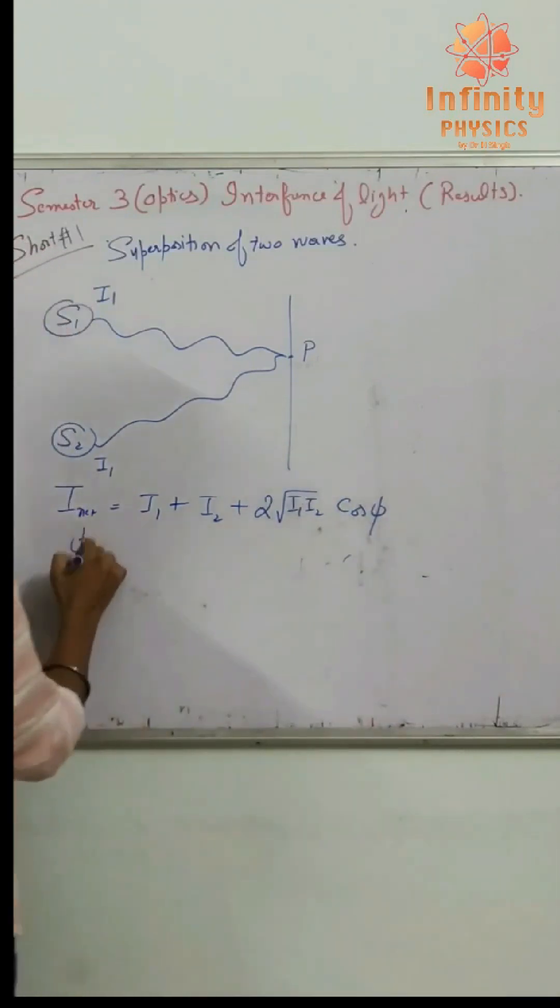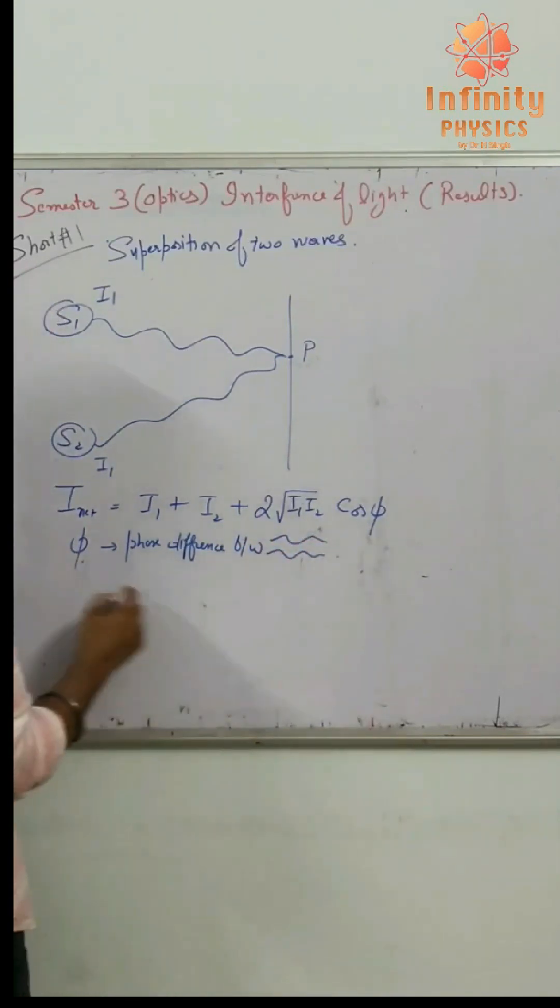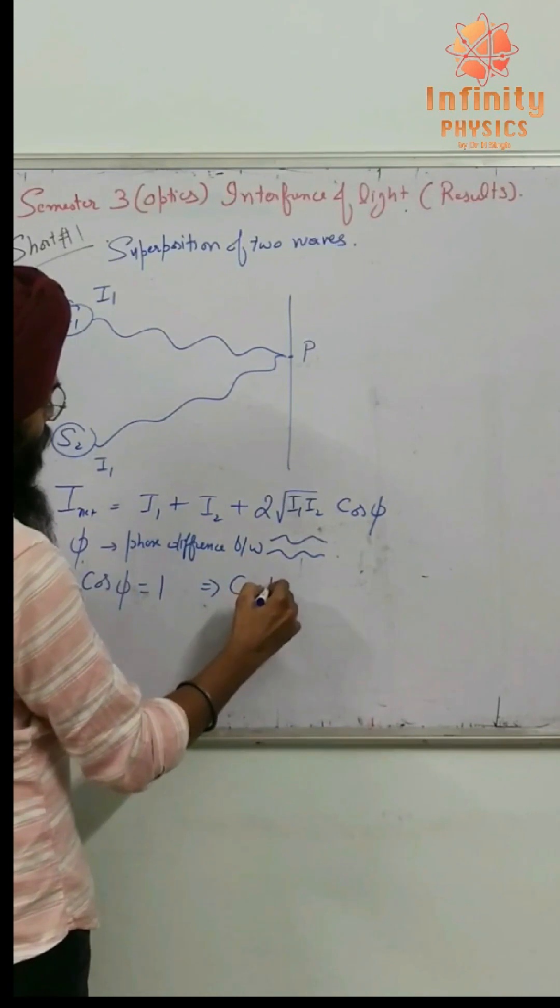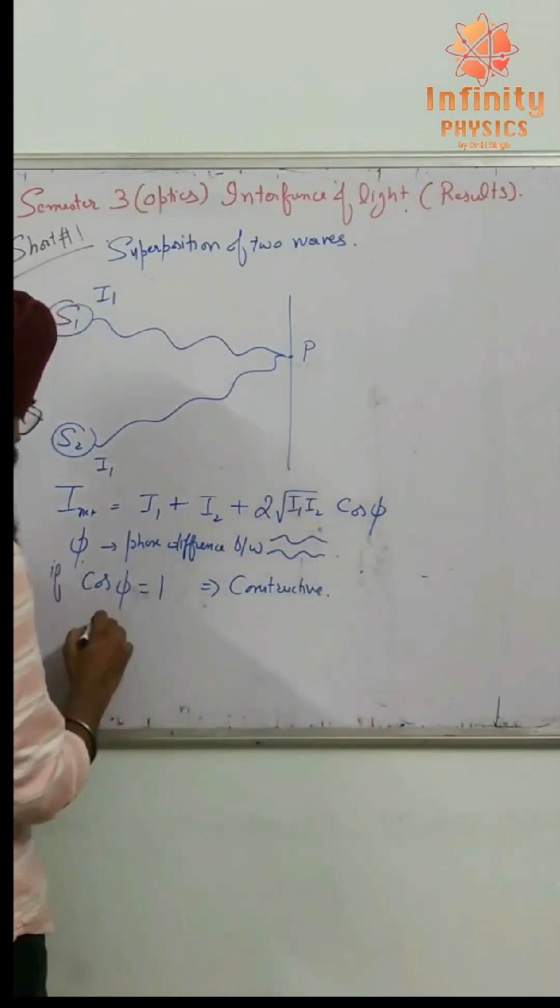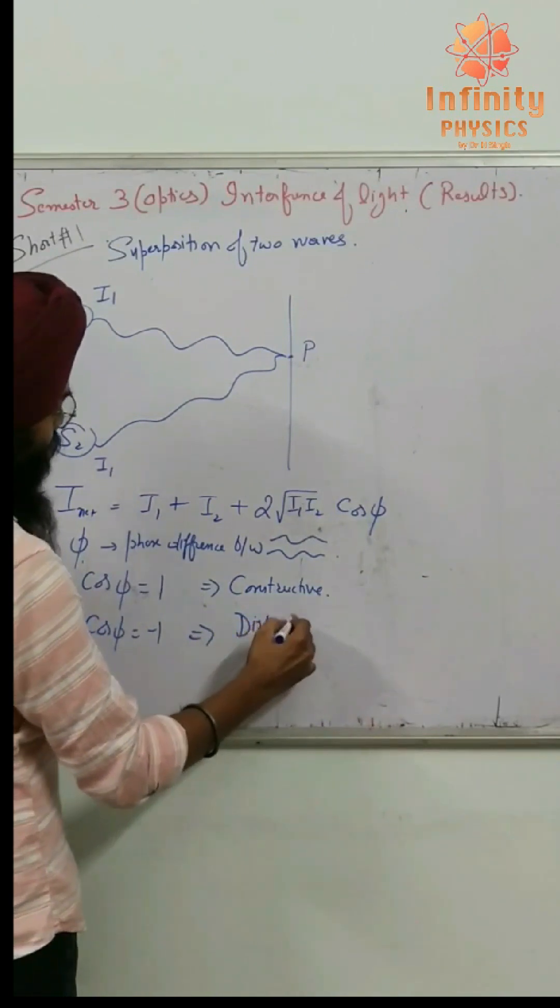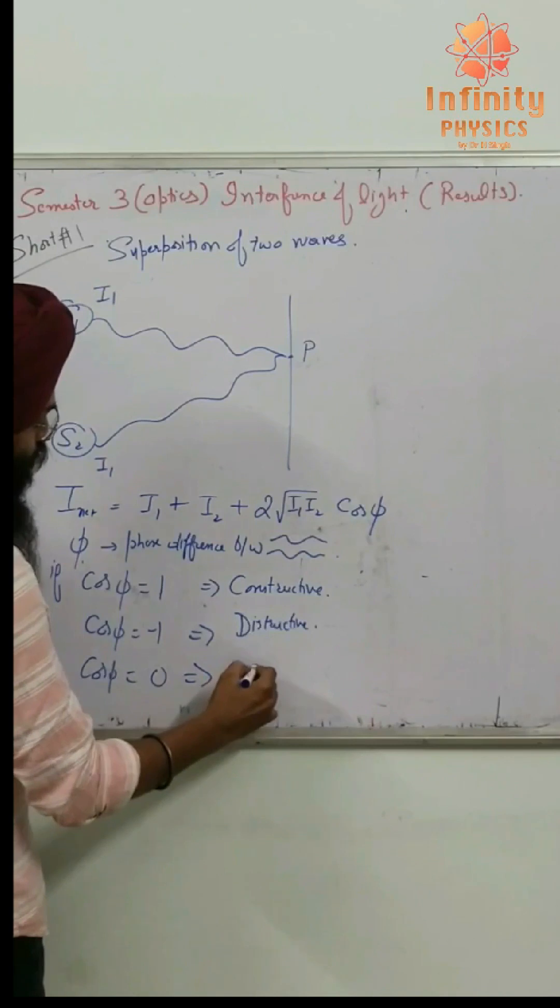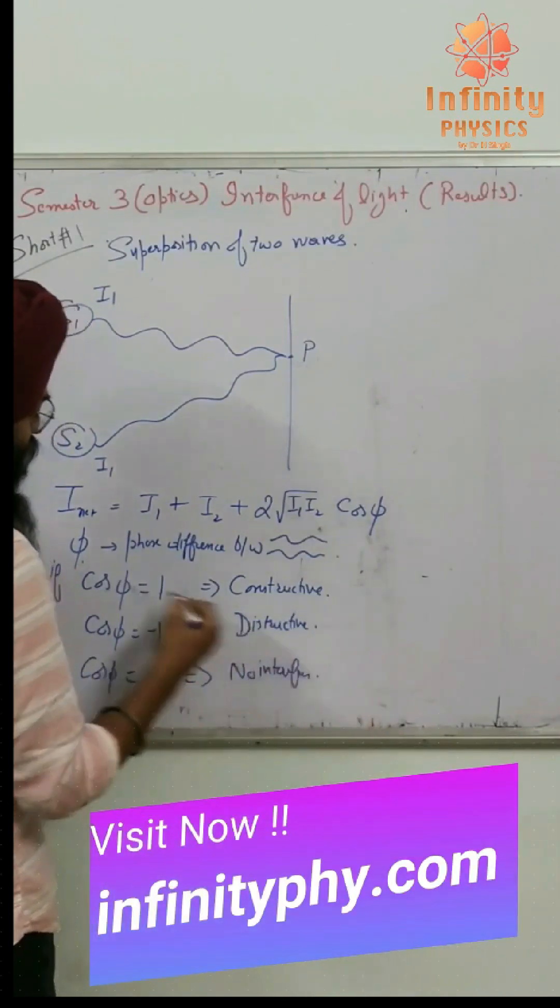Phi is the phase difference between wave 1 and wave 2. So if cos phi is 1, then constructive interference. If cos phi is minus 1, then destructive interference. If cos phi is 0, then no interference.